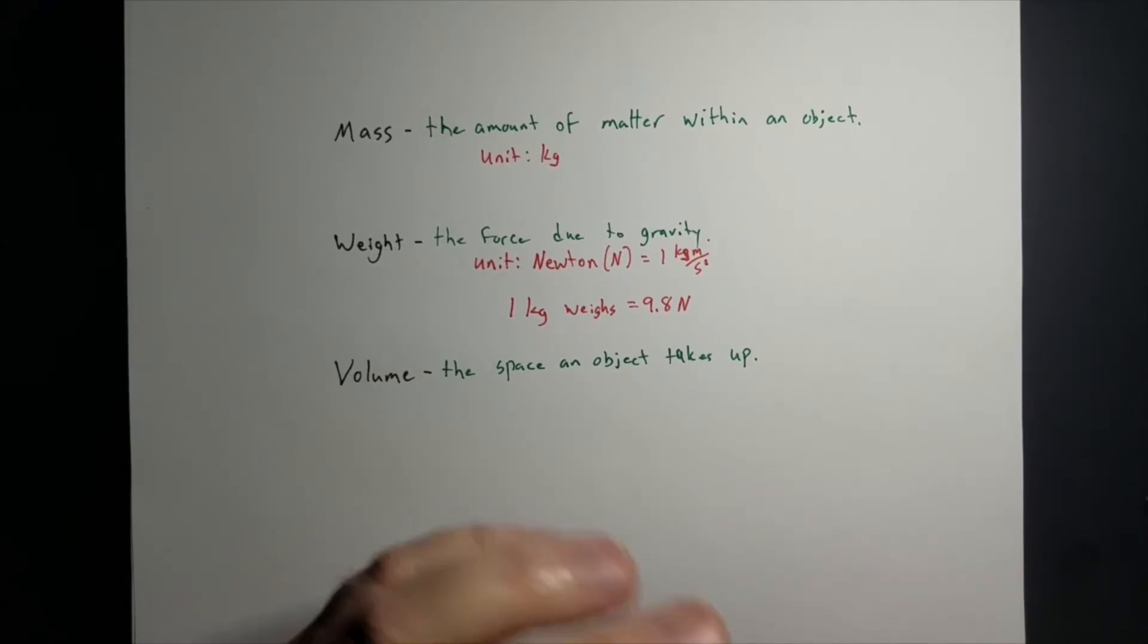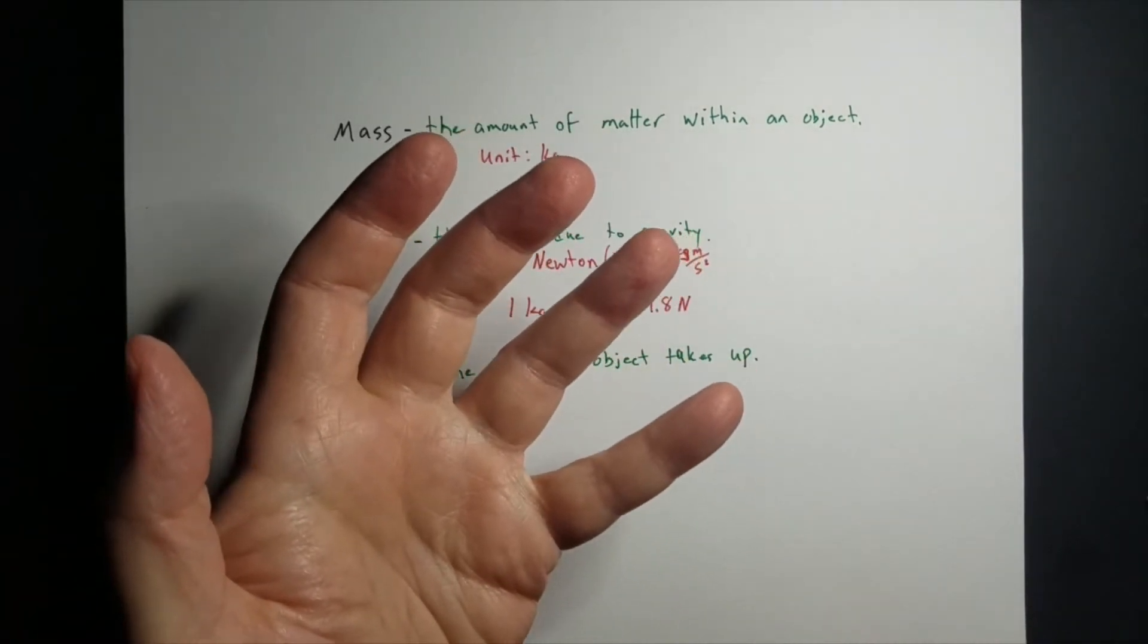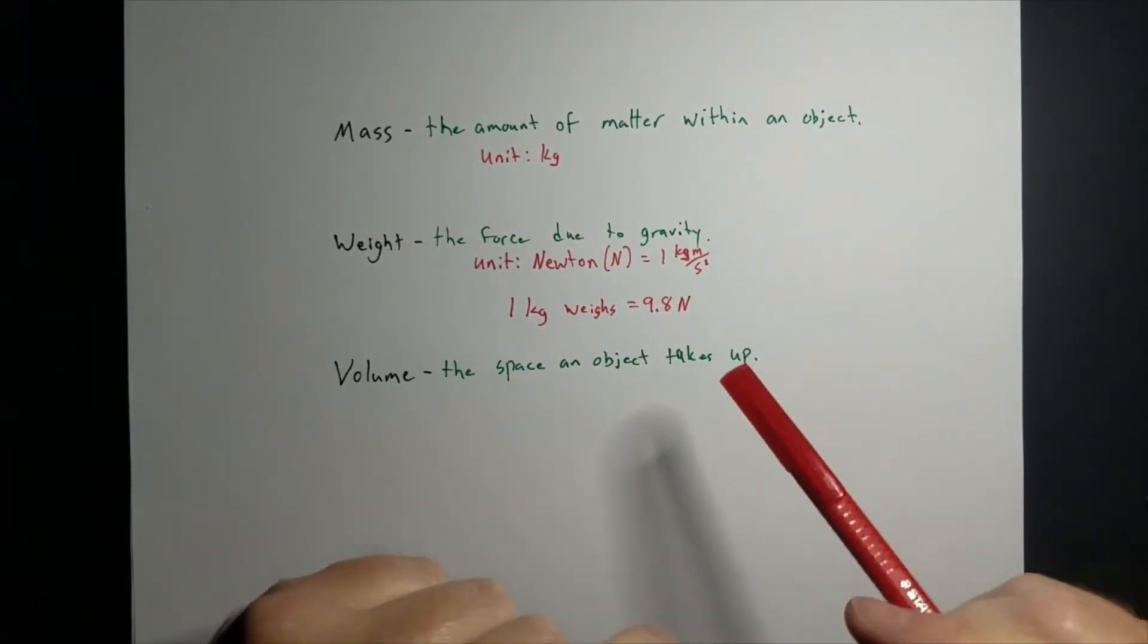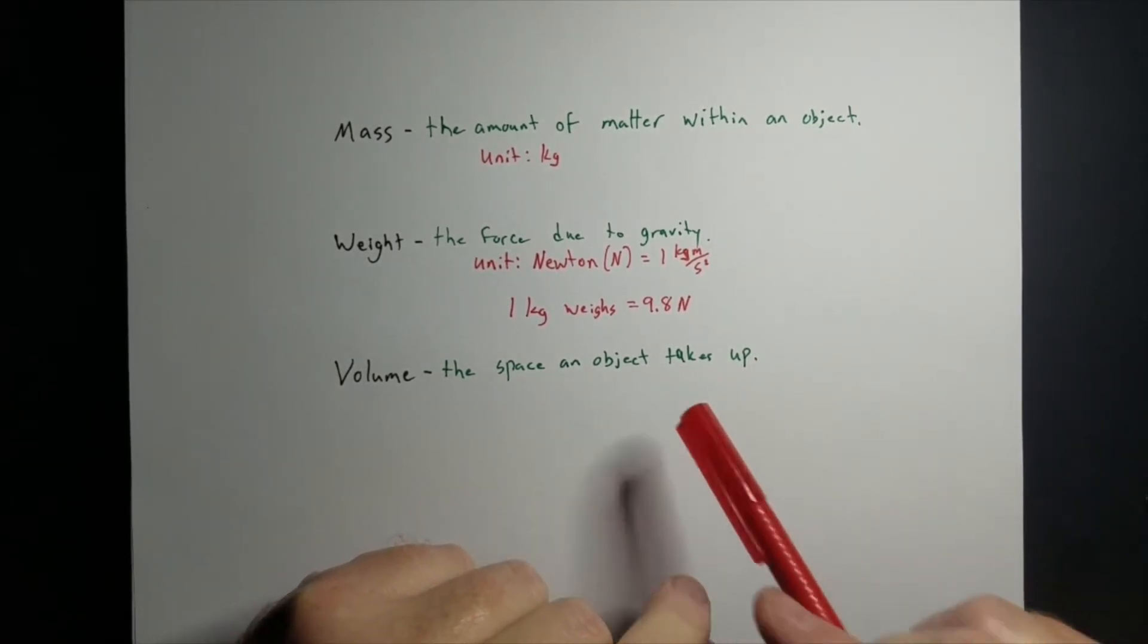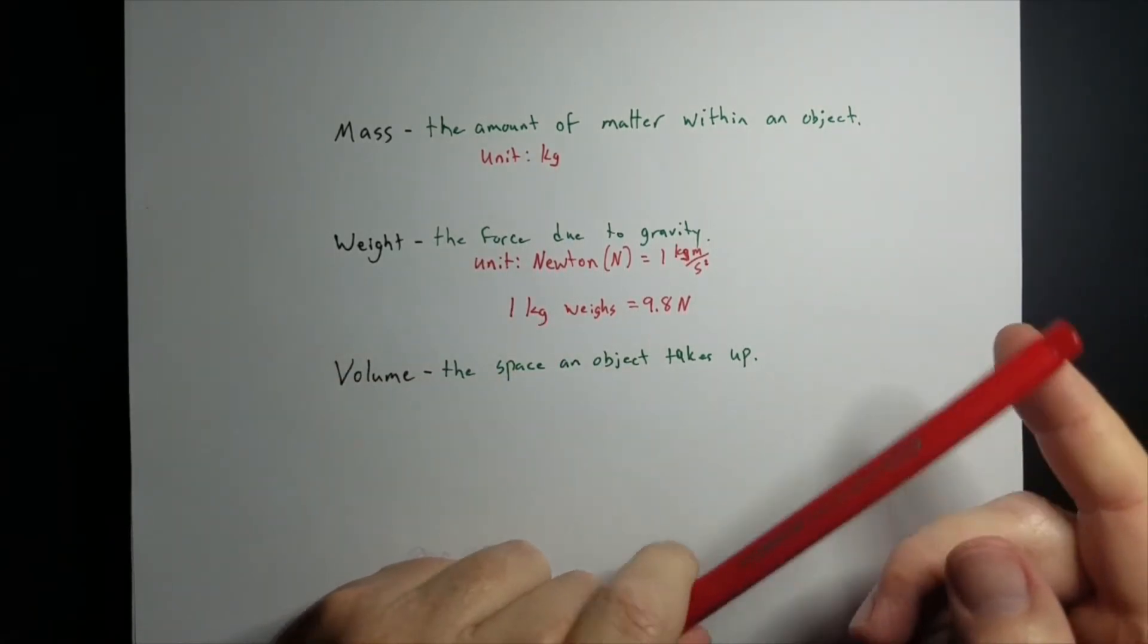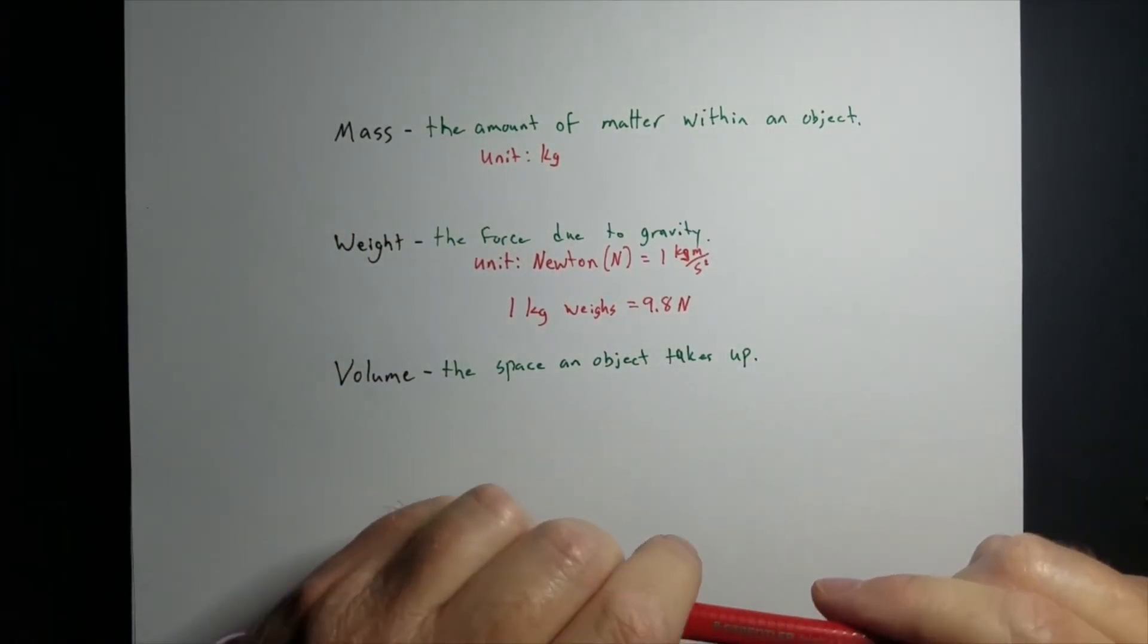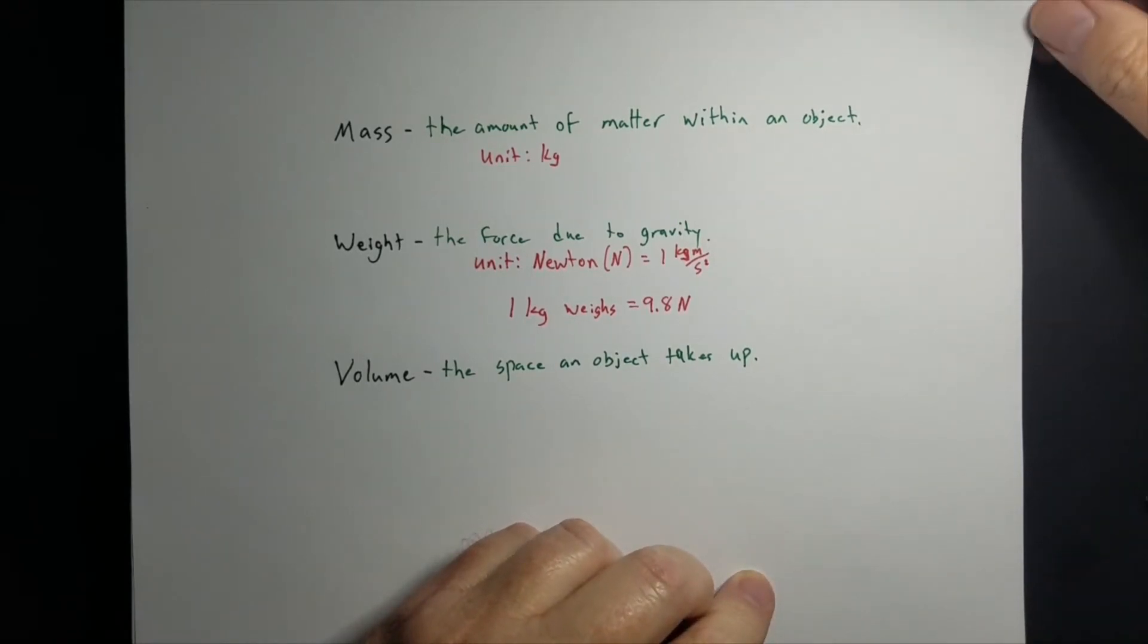If you want to know what a Newton feels like, go to McDonald's, get a quarter pounder with cheese and hold it in your hand. That weighs roughly one Newton. Then maybe order something else. But anyway, if my mass was 100 kilograms and I weighed 980 Newtons, you could put me on one side of the scale and 980 quarter pounders with cheese on the other and we should balance, theoretically. But now you know you're worth in quarter pounders with cheese.